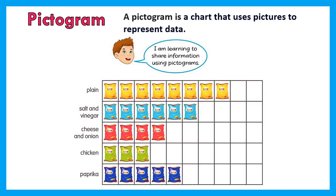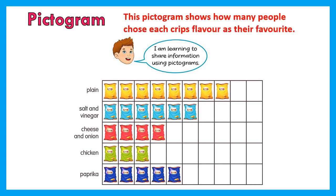A pictogram is a chart that uses pictures to represent data. This pictogram shows how many people chose each crisp flavor as their favorite.